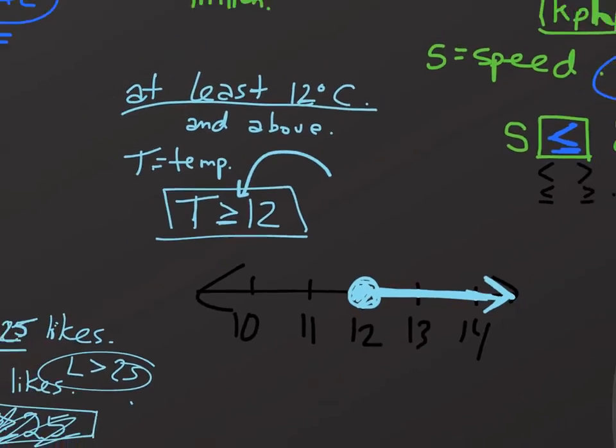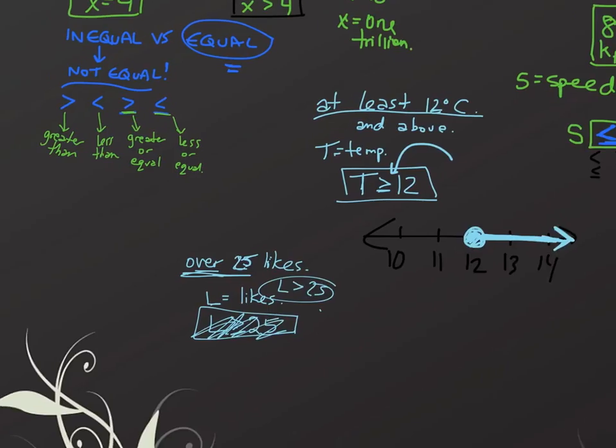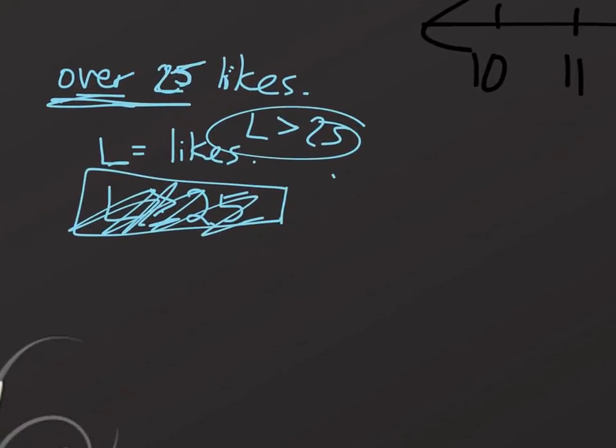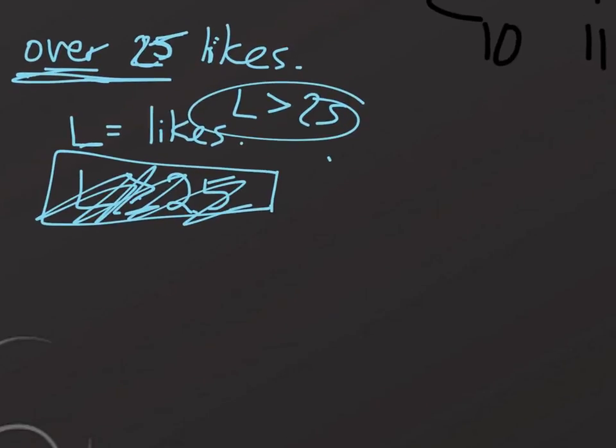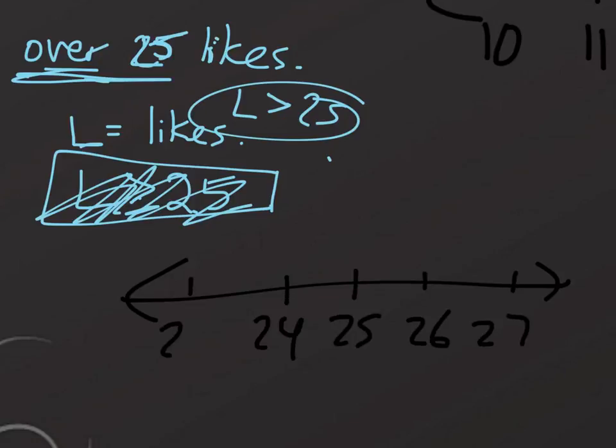Let's try one more, and that'll be it for this video. When I needed to get over 25 likes. Let's start by drawing a number line. 25 in the middle. Start off by drawing my circle at the 25.